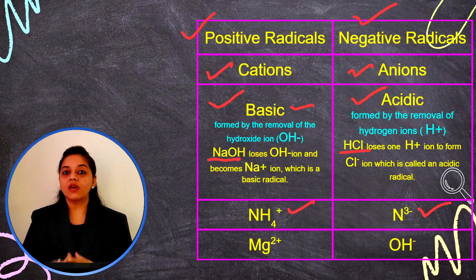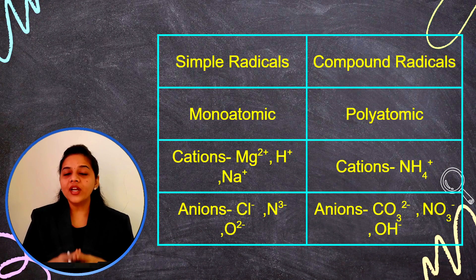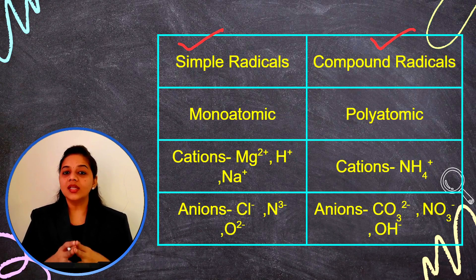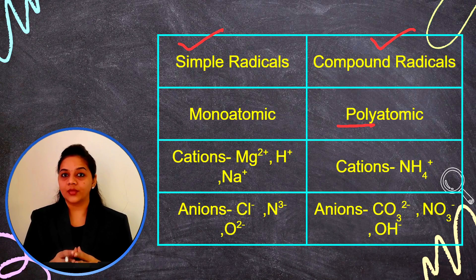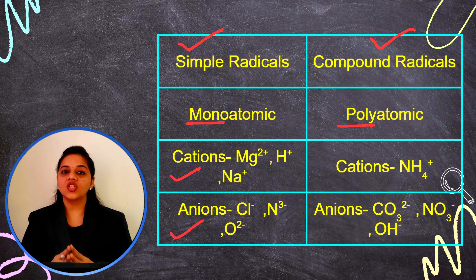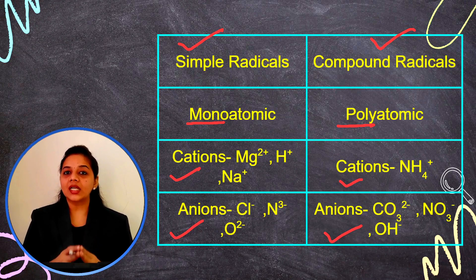Now let's see different types of radicals according to the number of atoms present in the radical. Depending on the number of atoms, radicals are of two types: simple radicals and compound radicals. Simple radicals are monoatomic — mono means one atom — and compound radicals are polyatomic — poly means more than one atom. Both types can carry positive charge (cations) or negative charge (anions).